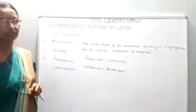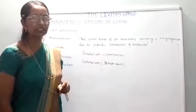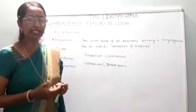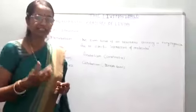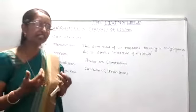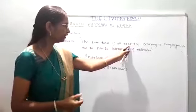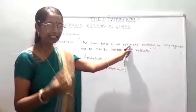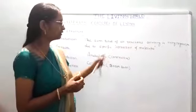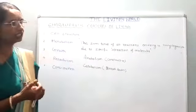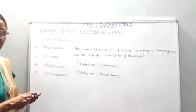Let us understand the meaning of metabolism. The definition of metabolism: it is the sum total of all reactions. For example, in our body, several reactions take place at a time. The best examples are respiration and digestion - these are two examples where different types of reactions are going on. It is a network of reactions taking place in the living organism within the cell, by an interaction of specific types of molecules.